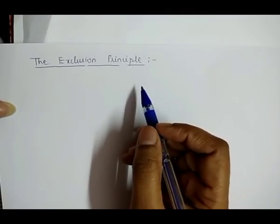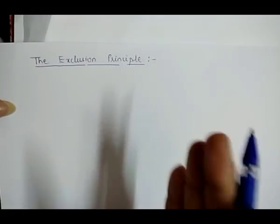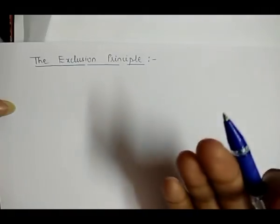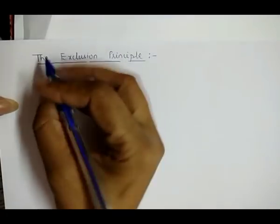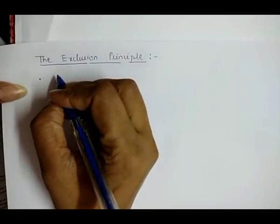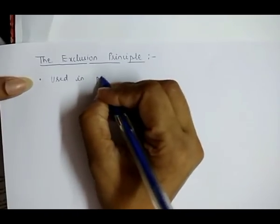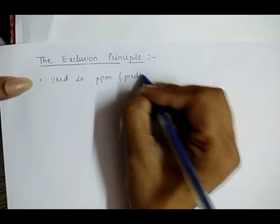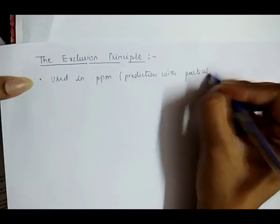As we already discussed that algorithm, in that we take some sequence, and we assume that we already encoded some sequence and created some order-level context table. According to that table, we are going to encode the whole sequence. This principle is used in PPM, that is Prediction with Partial Match.